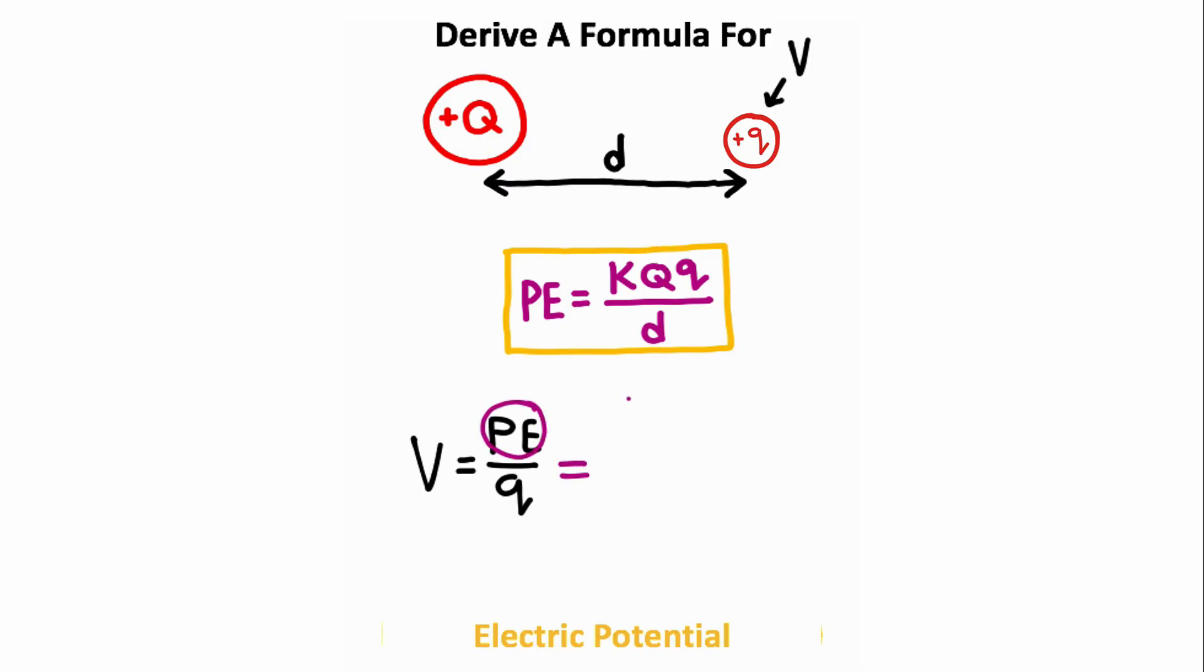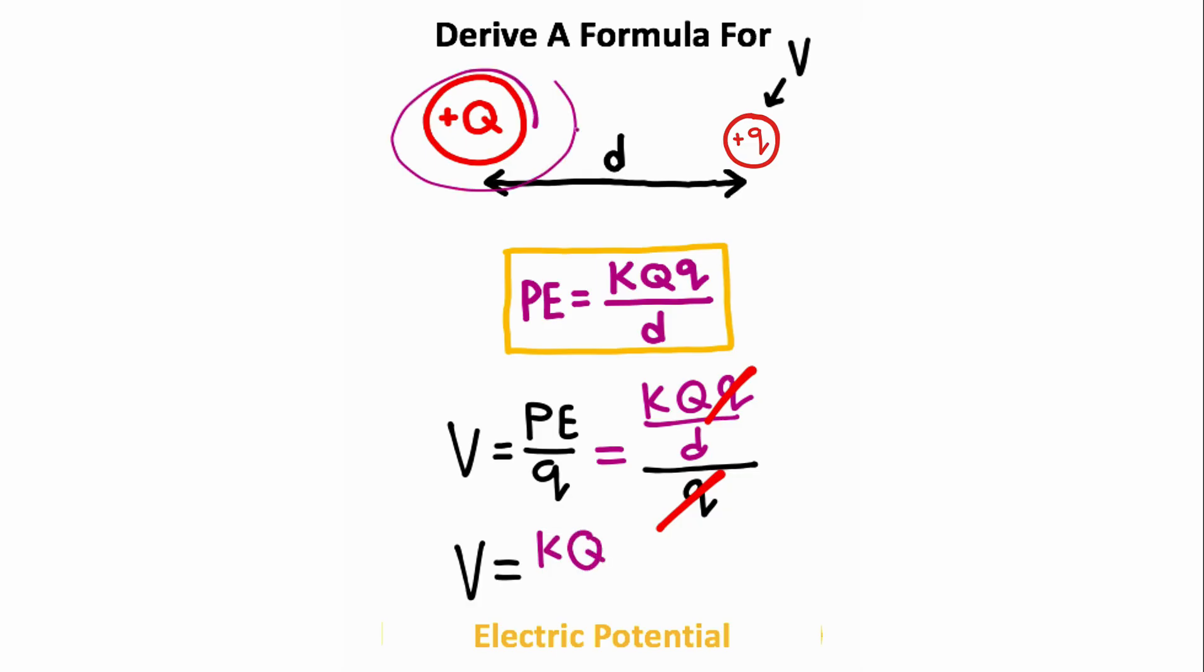Now the electric potential energy equation is Coulomb's constant times charge 1 times charge 2 divided by distance as shown right here. We then need to divide this by the charge little q, where conveniently these two charges cancel. So the equation for the electric potential at this point right here is going to be Coulomb's constant times the charge big Q divided by the distance to that charge. So this is the electric potential equation we're looking for.